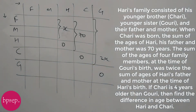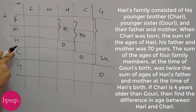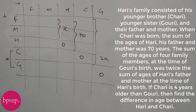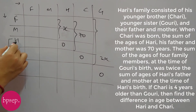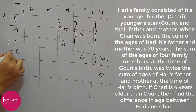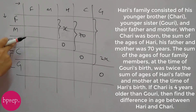Chari is 4 years older than Gauri, so this difference is 4. We need to find the difference between Hari's and Chari's age. Let's say this difference is D, so D years is the difference between Hari and Chari's age.